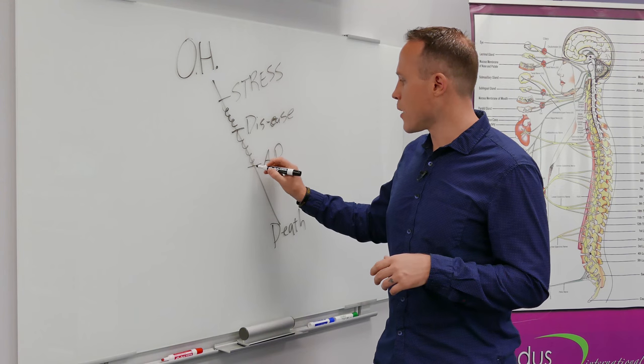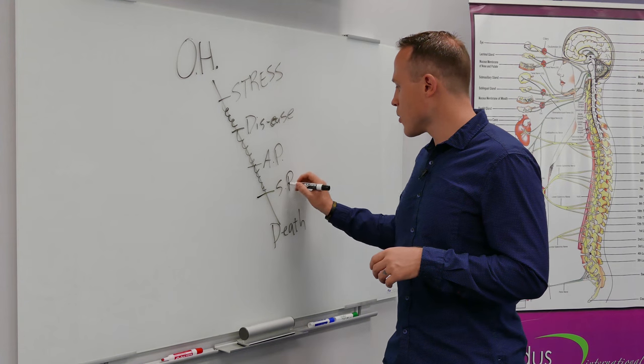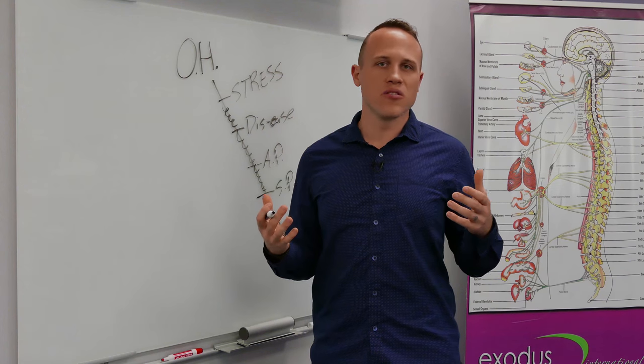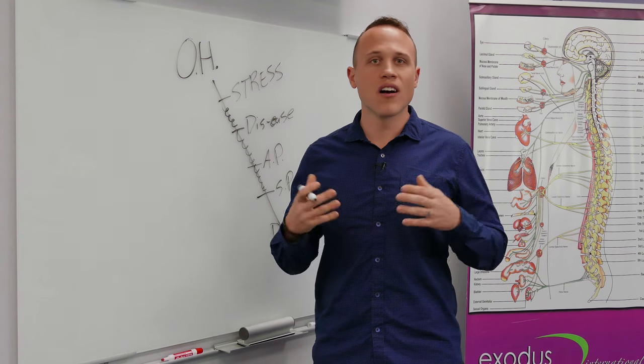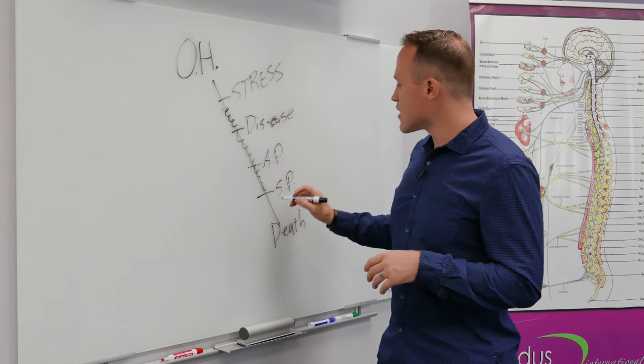Now if we weren't tested or didn't know that was going on, we keep going downhill to symptomatic pathology. That's what we do feel - our back pain, when the blood pressure is starting to affect us, when our lungs aren't working the way they should and we're having difficulty breathing. That's your symptomatic pathology.